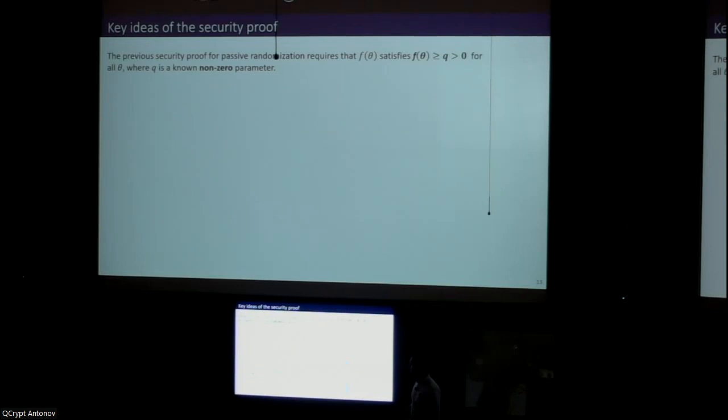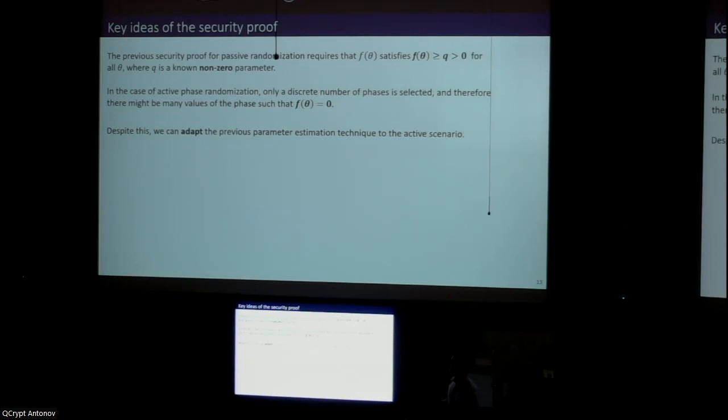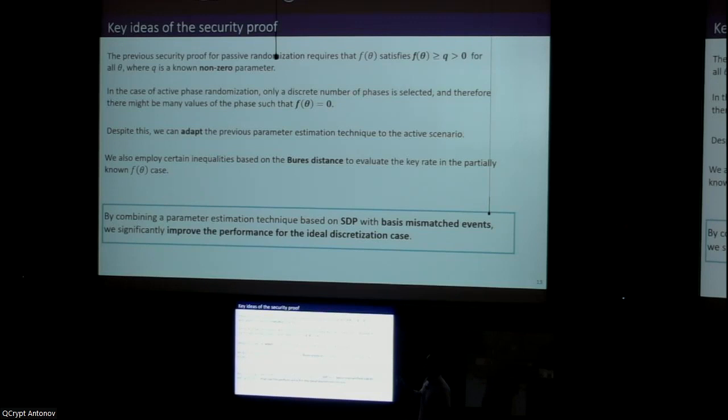I'm not going to go into the security proof, but right from the beginning we would like to apply Guillermo's security proof. The thing is we cannot do that because in an active setup this condition here does not hold. We cannot find this q parameter that should be a non-zero parameter because essentially in an active setup, in reality there are a lot of values of θ for which the PDF is basically zero. Despite this, we can adapt the security proof for the active scenario. We can combine this with certain inequalities that are based on Bore's resistance. We come up with a parameter estimation technique that is based on semi-definite programming, just as Guillermo's, and that also considers basis-mismatched events and that can significantly improve the performance for the ideal discretization case. Of course, it can also deal with these more realistic scenarios that I just introduced.